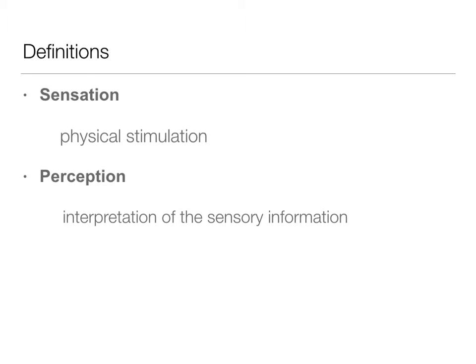Perception, on the other hand, is the interpretation of that sensory information. While the sensation may be the same, your perception of it may be different. This is where the mental processes are going to come into effect in terms of thinking on how this works.